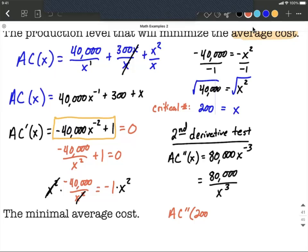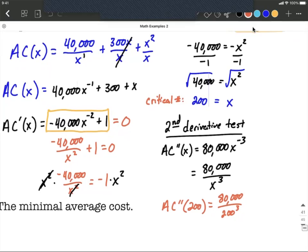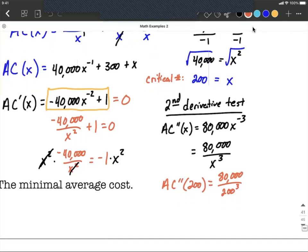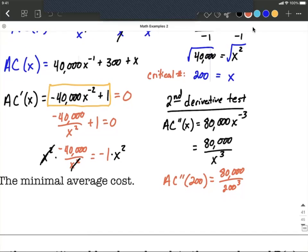So 200 gets plugged in and we're going to get 80,000 divided by 200 cubed. Now what we really care about is if this turns out positive or negative. Because the numerator is positive and we're dividing by a positive number that's been cubed, the overall result is going to be positive.